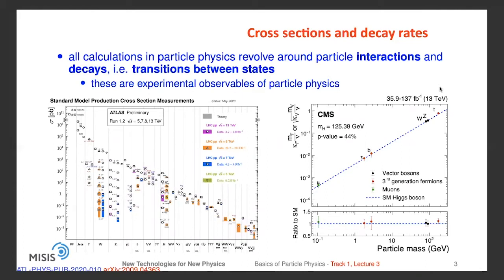All calculations in particle physics revolve around particle interactions and decays, meaning transitions between different states. These are basically the experimental observables of particle physics which are then compared to theoretical calculations. On this slide you can see an example of two plots. The left plot corresponds to a summary of standard model production cross-section measurements for various processes performed by the ATLAS collaboration, showing four classes of measurements performed at different center-of-mass energies, all compared to the theoretical prediction listed in grey.